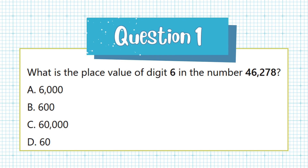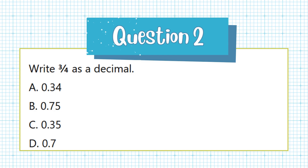Question 2. Write 3 quarters as a decimal. a. 0.34, b. 0.75, c. 0.35, d. 0.7.